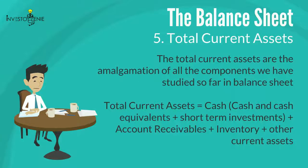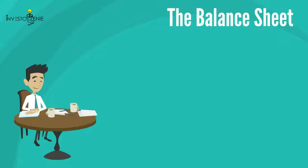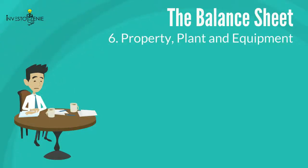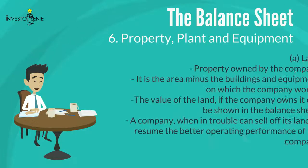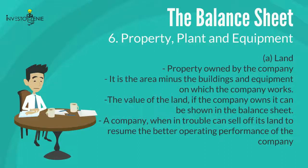Five: total current assets are the sum of all components studied so far in the balance sheet — cash and cash equivalents, short-term investments, receivables, inventories, and other current assets. Six: property, plant, and equipment can be broken down into three categories. First, land is the property owned by the company — the area minus the buildings and equipment on which the company works. The value of the land, if owned, can be shown on the balance sheet, and it also carries real estate value.